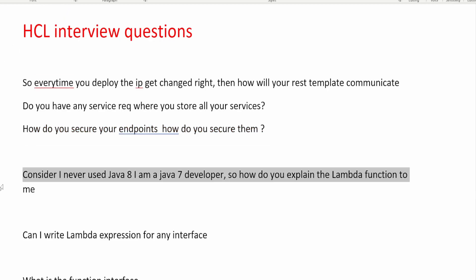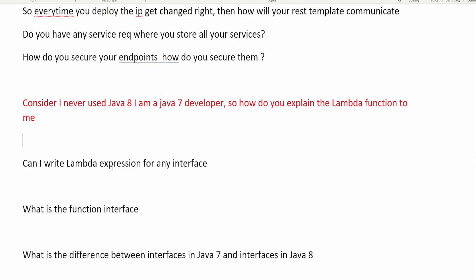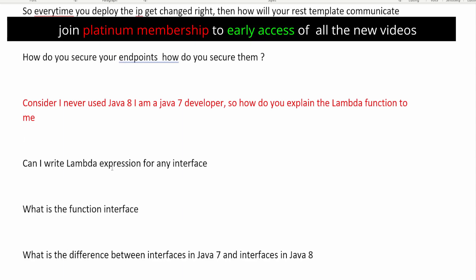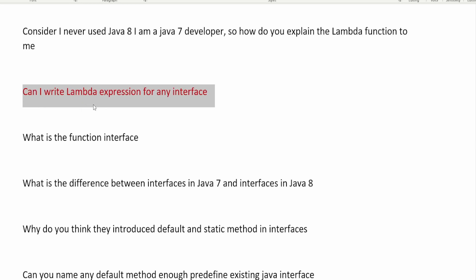The next question is: consider I have never used Java 8 and I am a Java 7 developer — how would you explain lambda expressions to me? Lambda is something introduced in Java 8. Some methods of the Stream API also accept lambda as an argument, but lambda is more than that — it provides a mechanism for functional programming in Java. There are multiple benefits of lambda, so consider reading about it in detail.